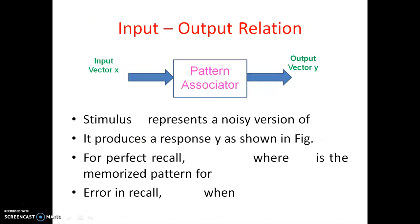For the input-output relation in the pattern associator, let small x represent a noisy version of xj, and let it produce a response small y as shown in the figure. For a perfect recall, y should be equal to yj, where yj is the memorized pattern for xj. If y is not equal to yj even when x is equal to xj, that is an error in recall.